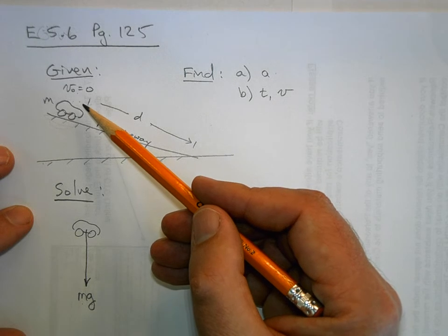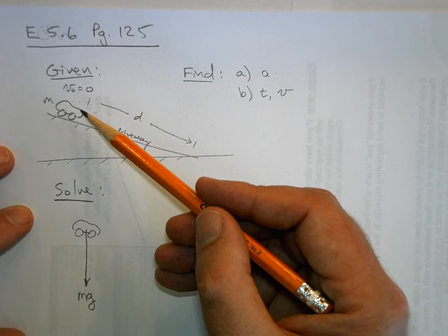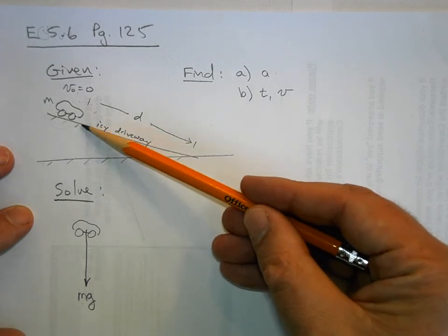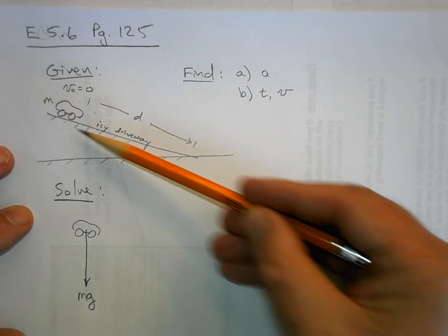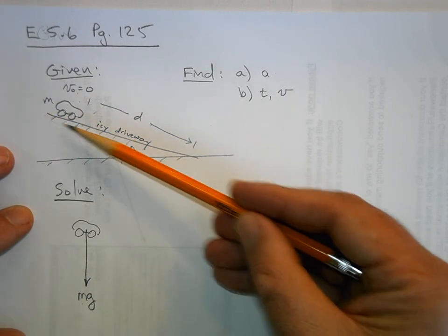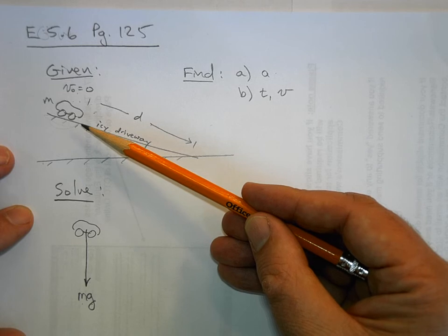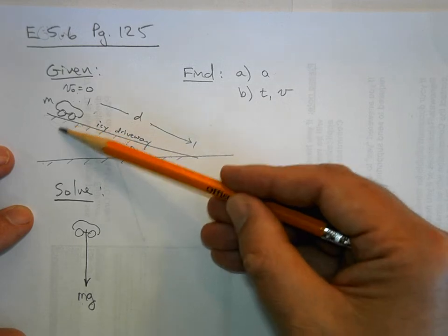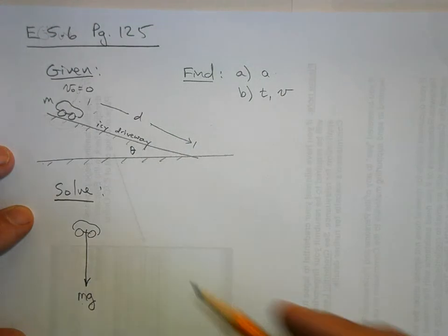Now this surface here has an interaction with the car as well, but it's an icy surface and we're assuming there's no friction. There's no friction, there's no way for this surface to apply a force along this direction, along the direction of the plane. But it can apply a force perpendicular to it, and of course we call that the normal force.